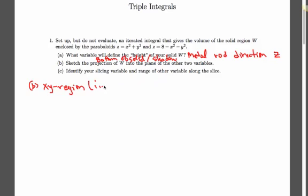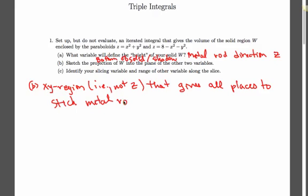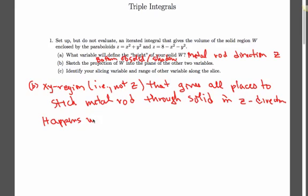So for b, we need an x, y region, i.e. not z, that gives all places to stick metal rod through solid in z-direction. Where is that going to happen? Well, that's going to happen at that circle where they intersect.